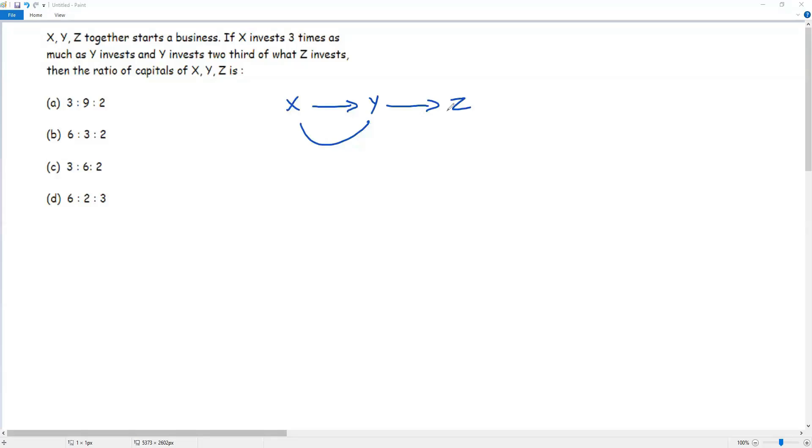See, the final one is Z. We can assume some value as investment for Z. Here what I'm going to do is I'm going to assume that Z invests K.